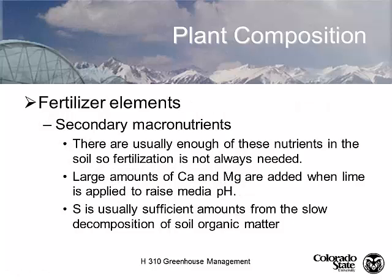Secondary macronutrients are calcium, magnesium, and sulfur. In traditional native field soil there's usually enough that we don't fertilize with them. But in a hydroponic situation where you're supplying all nutrients, you have to think about it. This applies whether you're using conventional or organic fertilizer — you've got to provide N, P, K, and calcium, magnesium, and sulfur.